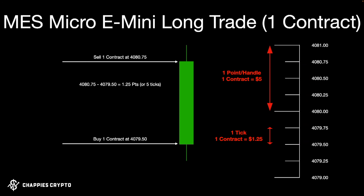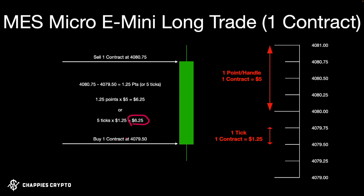Taking a long trade on the MES: buy one contract at the entry price, sell one contract at the target. Price has moved five ticks — which equals 1.25 points. The price difference is 1.25 points. To calculate profit: 1.25 points times five dollars per point equals six dollars twenty-five. Or alternatively, five ticks times one dollar twenty-five per tick equals six dollars twenty-five. That's how the micro e-mini contract works — as you can see, the value per move is much less.